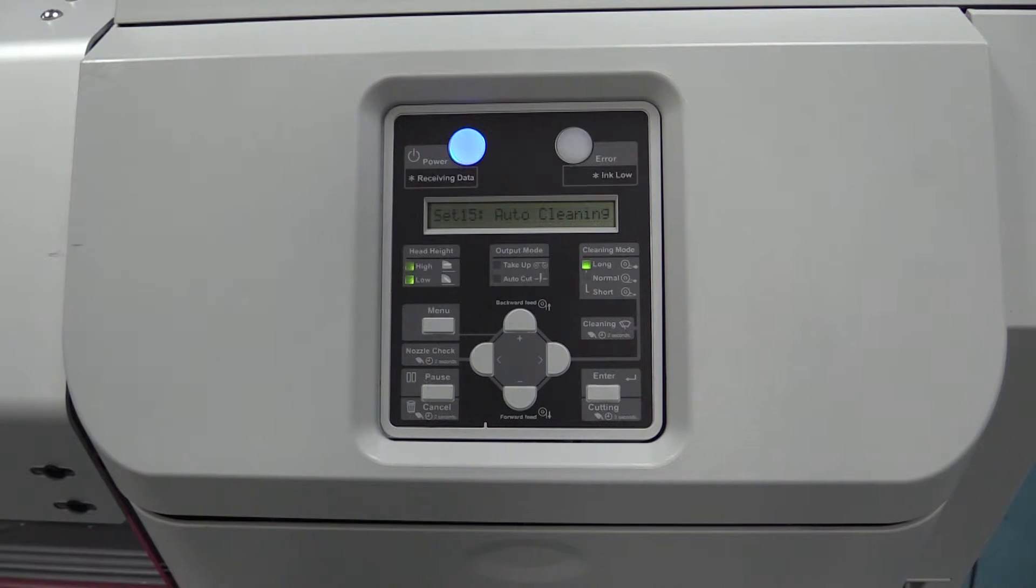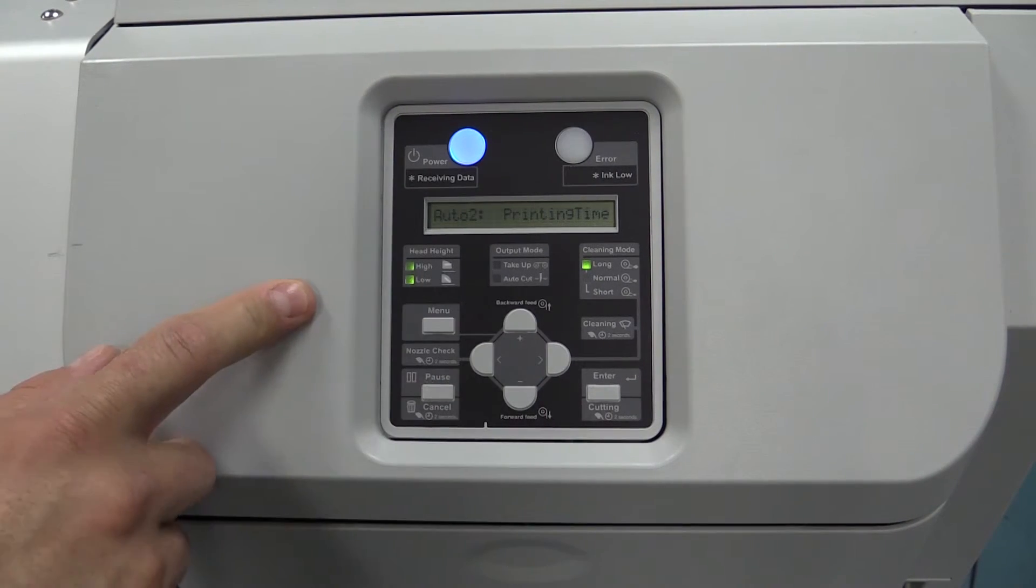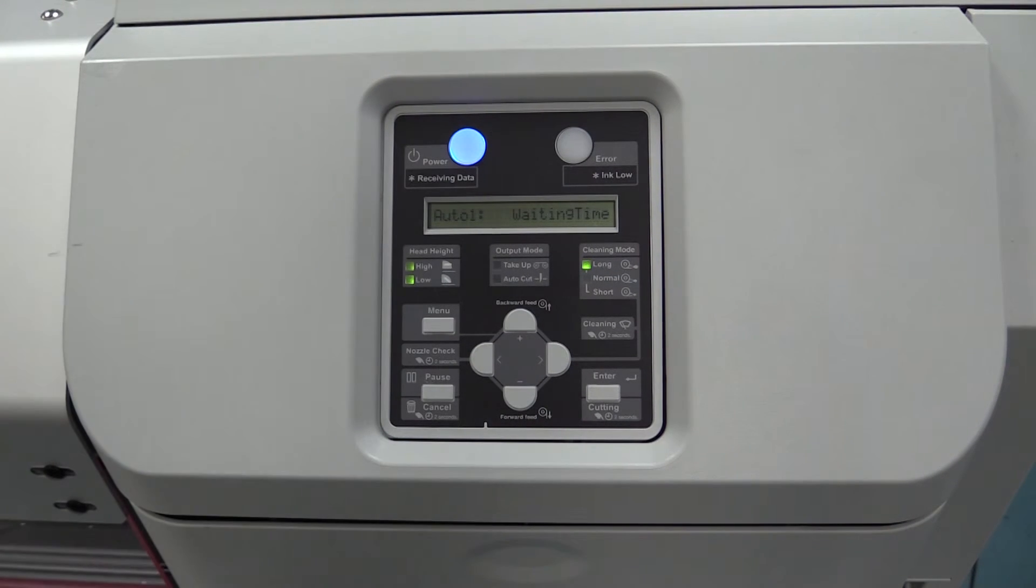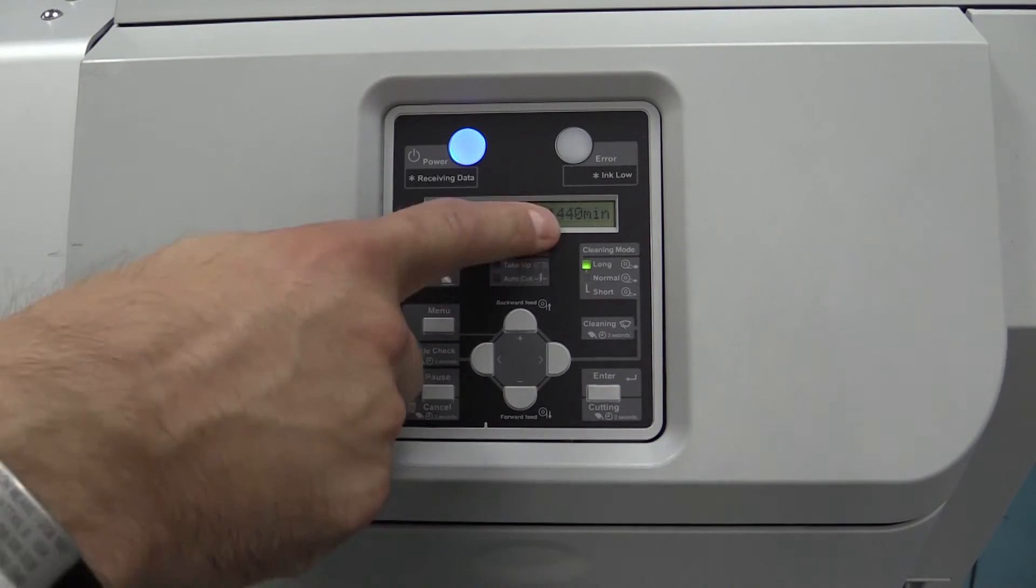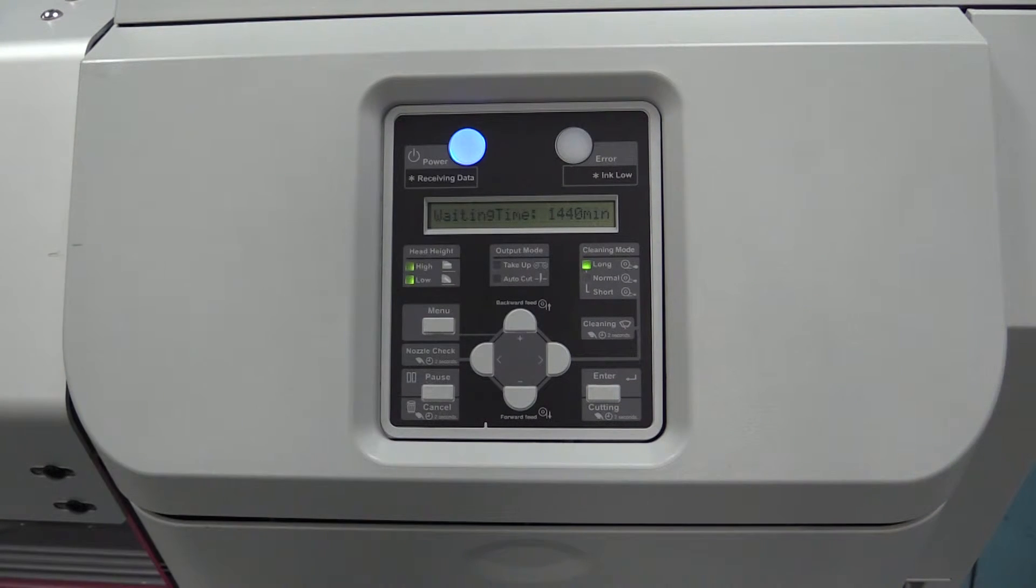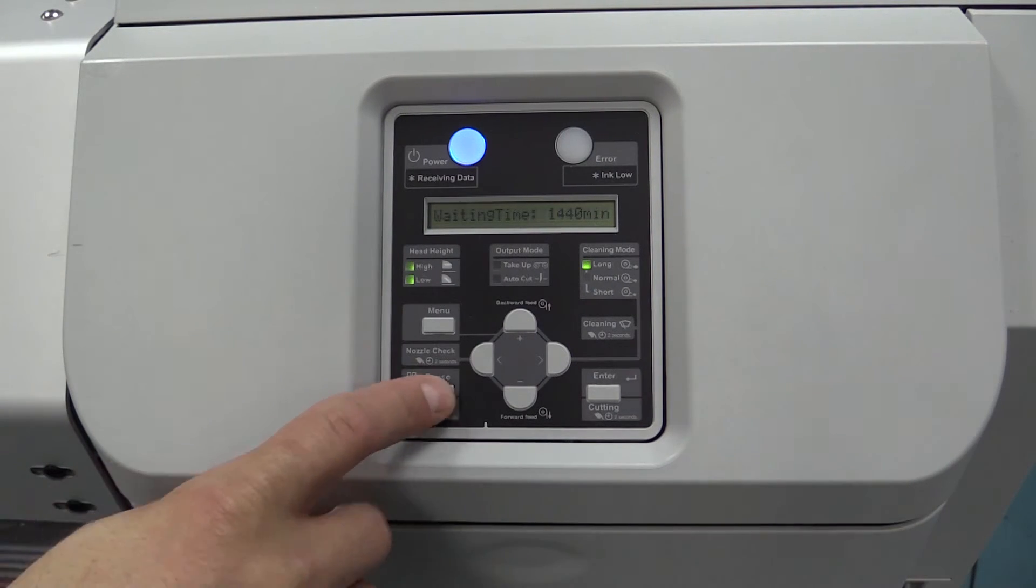Setting 15 is also one of the critical ones. This is auto-cleaning. Within the menu you've got three options: waiting time, printing time, and before print. Waiting time is where you program in your daily clean. We have this set to 1440 minutes, which is once a day. So every 24 hours it's going to do its auto-clean, where it spits out a small bit of ink just to make sure the print head is clean, nothing is drying up in the nozzles, and you're good to go.